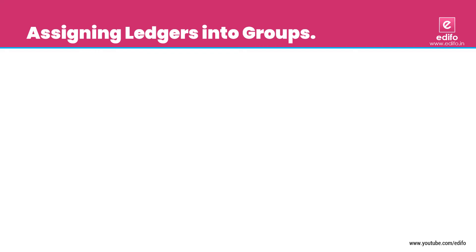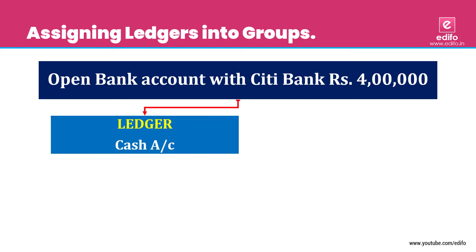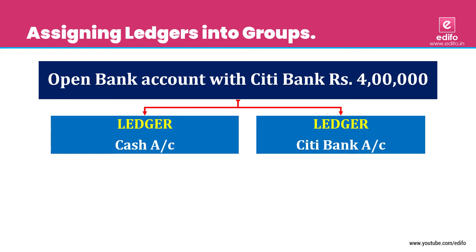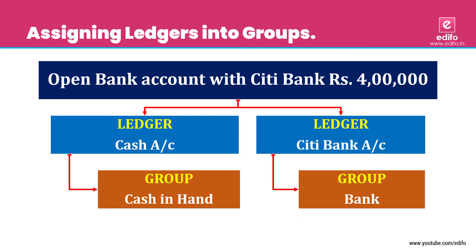Move to the next transaction: open bank account with Citibank for rupees 4 lakh. We deposit 4 lakh rupees into Citibank. Two accounts are involved: cash outgoing and we increase the bank balance. So the two aspects are cash account and Citibank account. Cash account belongs to 'Cash in Hand' and Citibank account belongs to 'Bank Account' group.